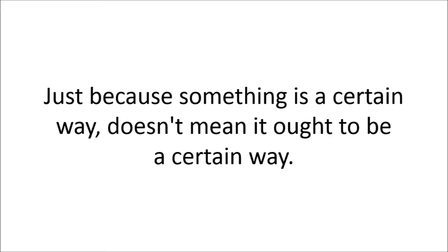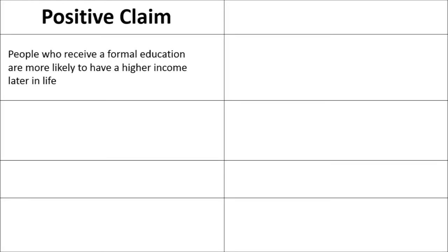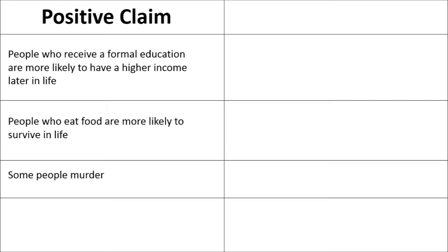To demonstrate this, let's have a look at some positive or 'is' claims. People who receive formal education are more likely to have a higher income later in life. People who eat food are more likely to survive. Some people murder. People are eaten by crocodiles. These are all descriptive statements — they're factually based and they correlate with reality.